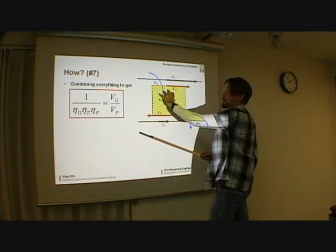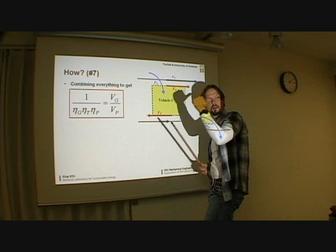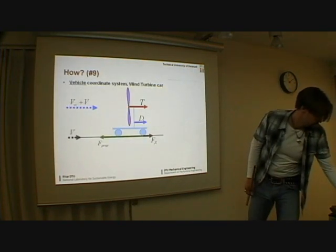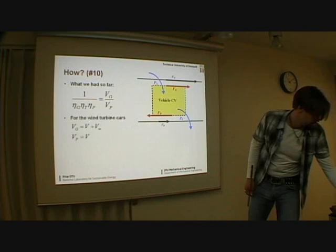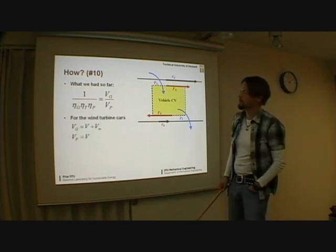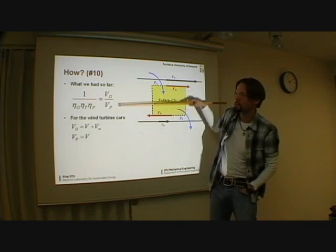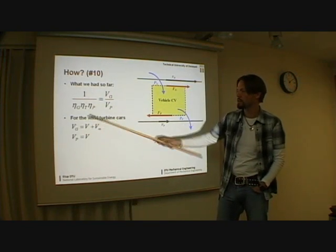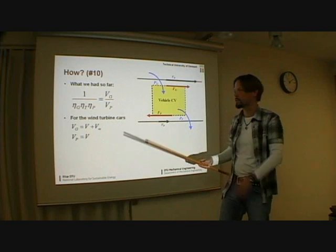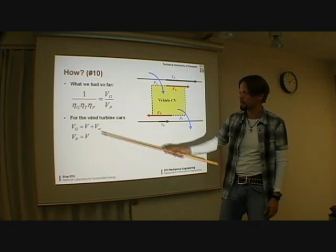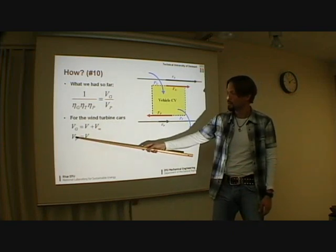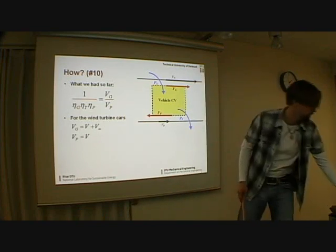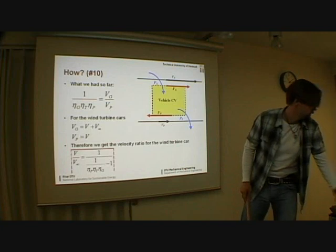Both velocities are coming towards me from the same side. I forgot to mention that over here, that this is also the case when I put up this equation. This equation is valid if I am sitting on a vehicle and both media come towards me from the same side. For the wind turbine, this was the equation we had. For the wind turbine car, generation velocity is the velocity of the air relative to the car. This is car motion and free stream velocity. And then the propulsion velocity is just the velocity of the ground towards me, which is the car speed.